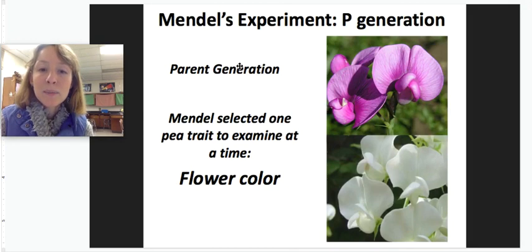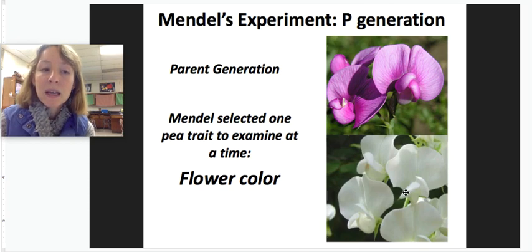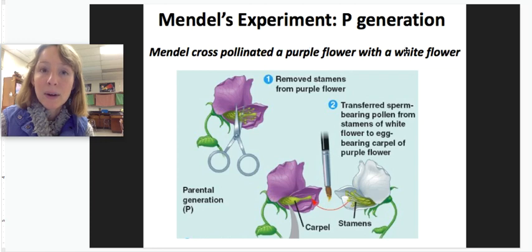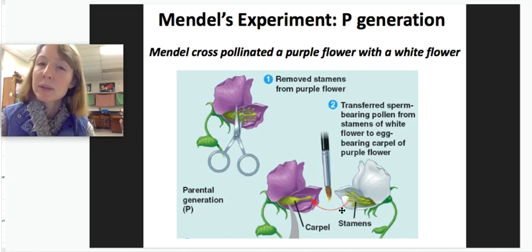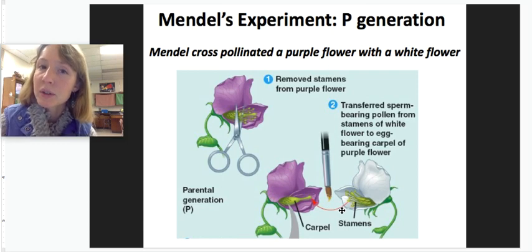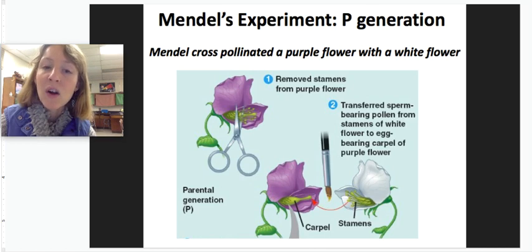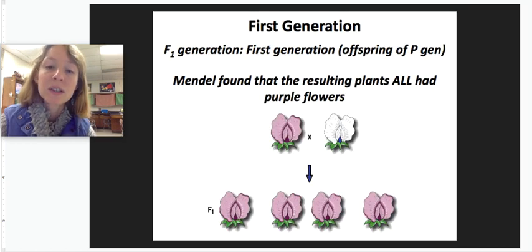For example, when he bred purple with white flowers, he asked what would happen. He pollinated a purple flower with a white flower. You might think the resulting flowers would be pink, but he actually found that all of the flowers in that first generation — the F1 generation — had purple flowers.